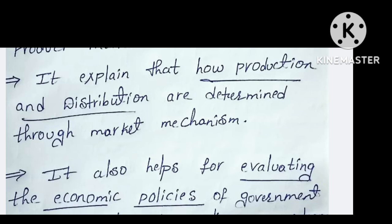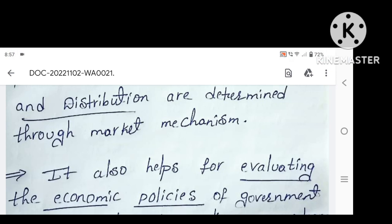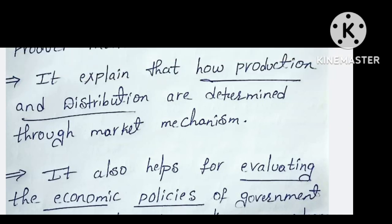Microeconomics also explains how production and distribution are determined through the market mechanism — how much of the goods is produced and how production is distributed to the general public.